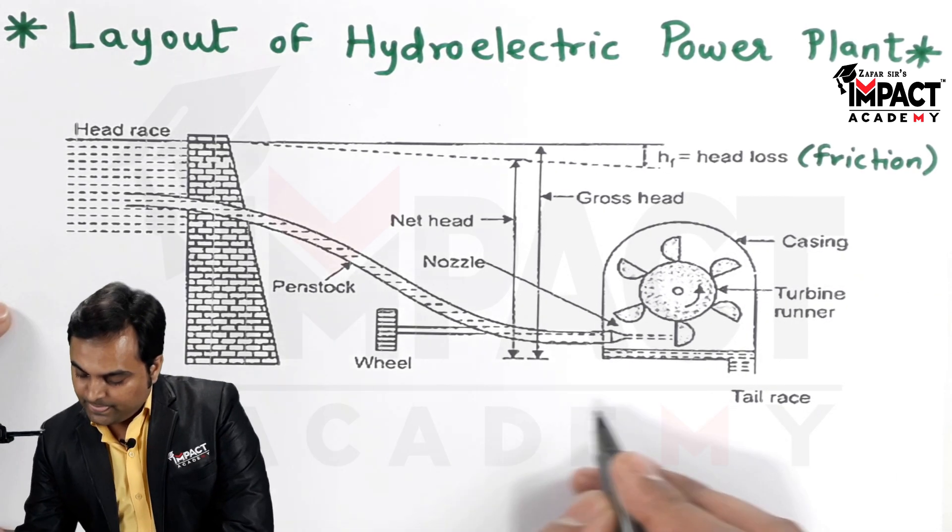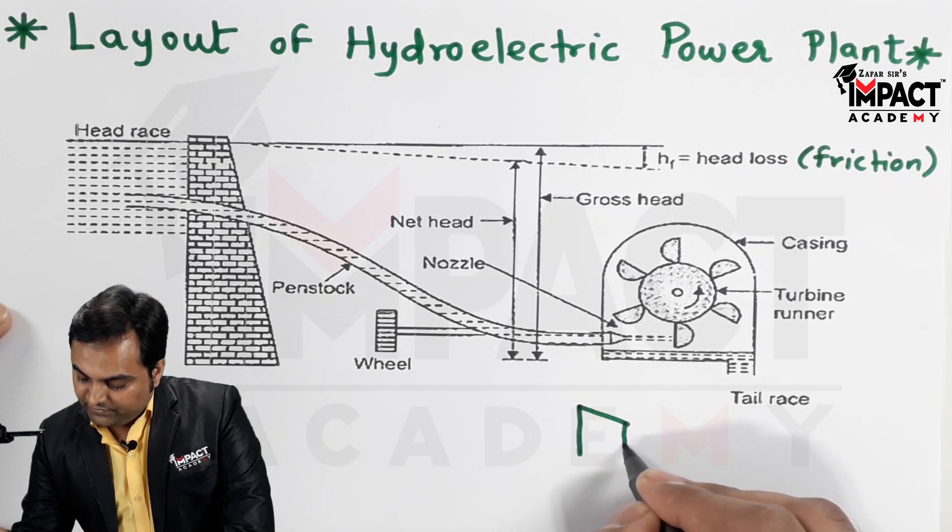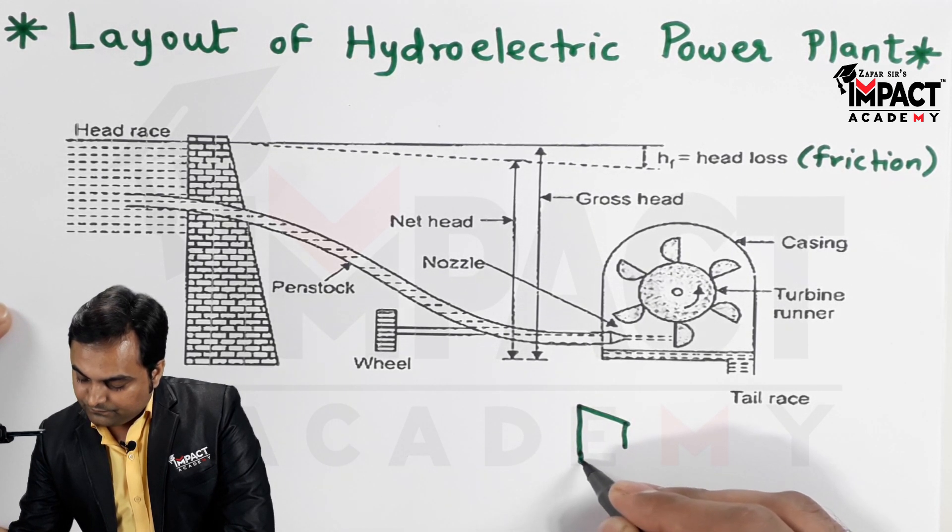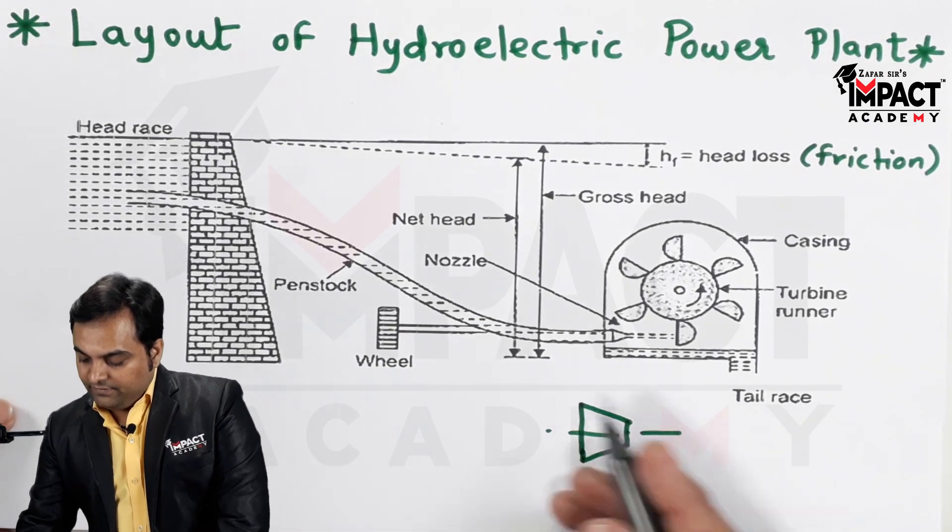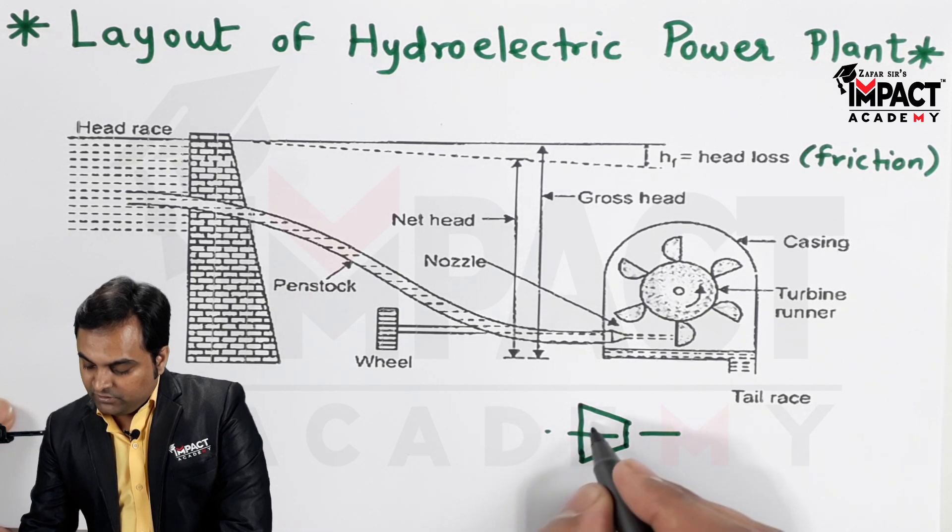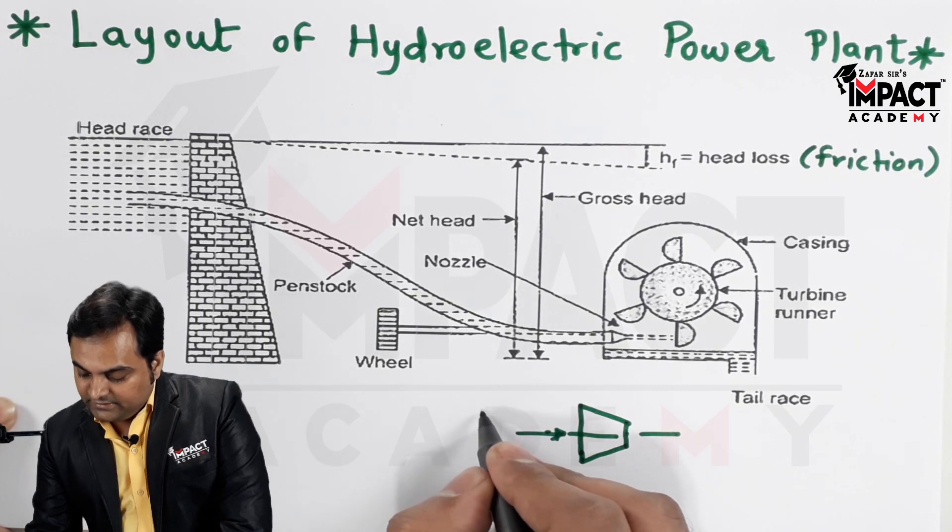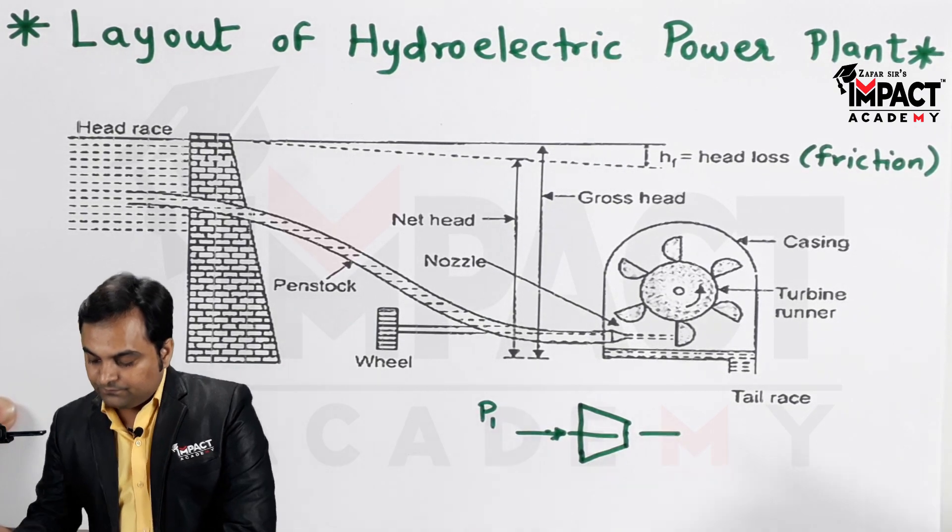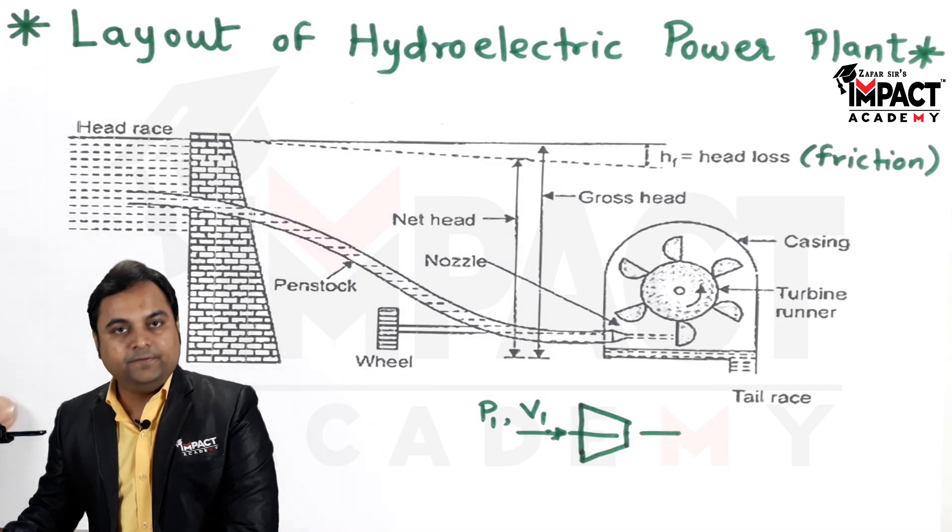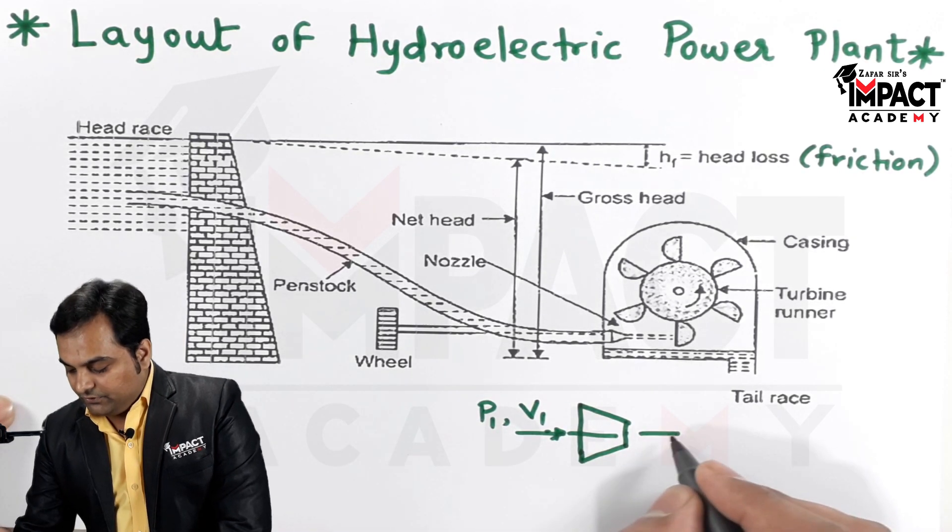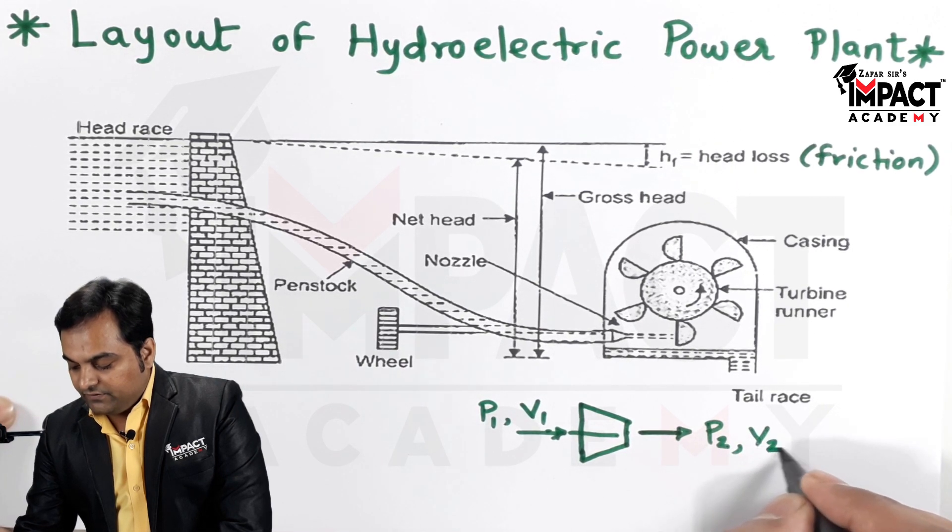Now, nozzle is that cross section which is continuously reducing in diameter, as we can see here. Inside the nozzle, suppose if the fluid or the water enters at pressure p1 and with a velocity v1, at the exit of the nozzle the pressure is p2 and the velocity is v2.